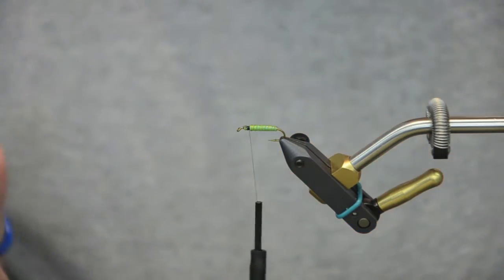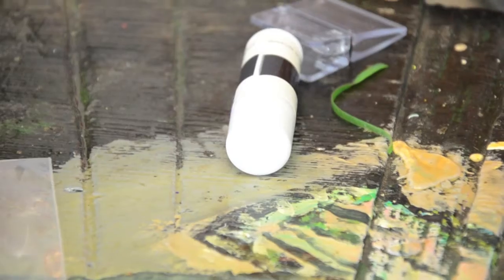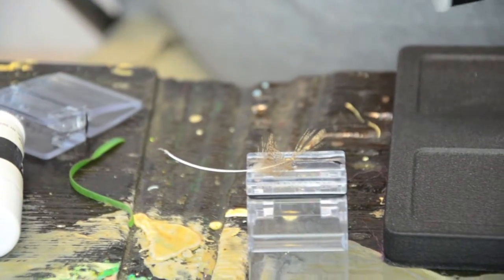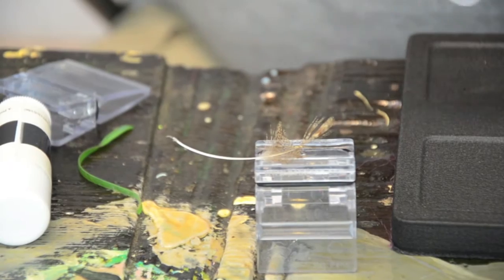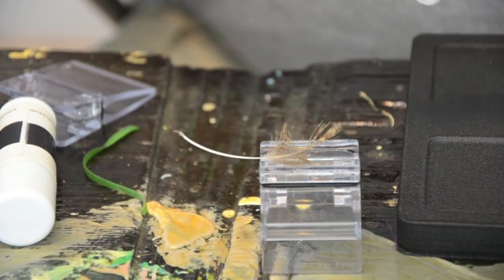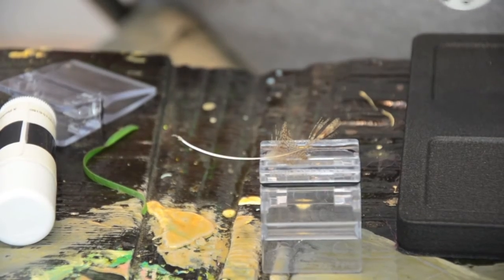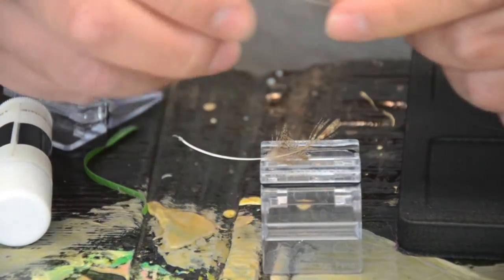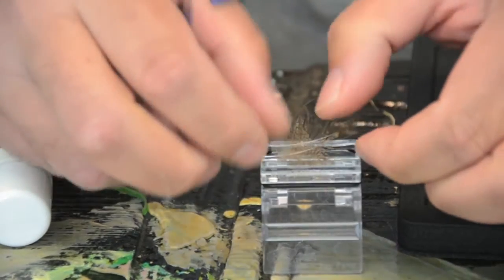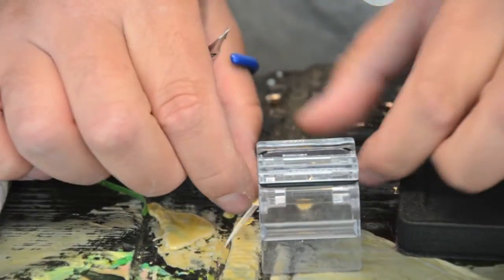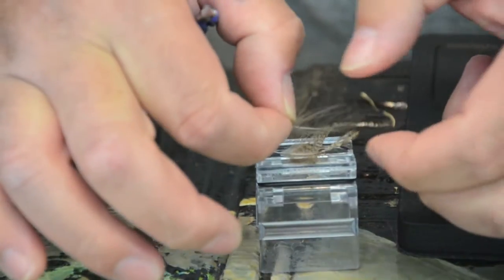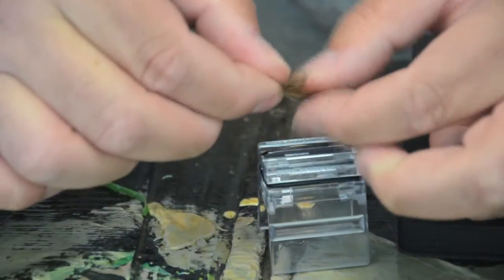Next we're going to use our Petitjean tool. I'm going to lay in a partridge feather. And I'm going to lay in a CDC feather. I generally will snip these off here at the base. I'm going to lay that in there. So partridge and CDC lined up.